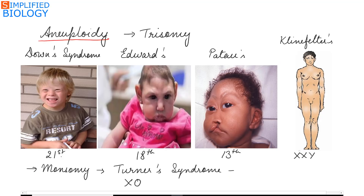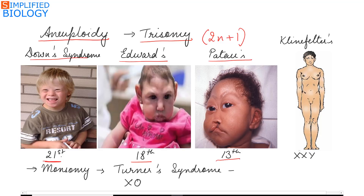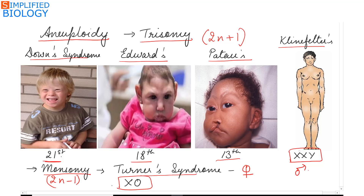Aneuploidy occurs due to non-disjunction of chromosomes. Trisomy means the chromosome number is 2n+1 — one chromosome is present in triplicates. Examples: Down syndrome where the 21st chromosome is in triplicate; Edwards syndrome where the 18th chromosome is in triplicate; and Klinefelter syndrome in human males, where instead of one X and one Y chromosome they have two X and one Y chromosome. Monosomy means the chromosome number is 2n−1 — one chromosome is without its homolog. Example: Turner syndrome in human females, where instead of two X chromosomes, only a single X chromosome is present.